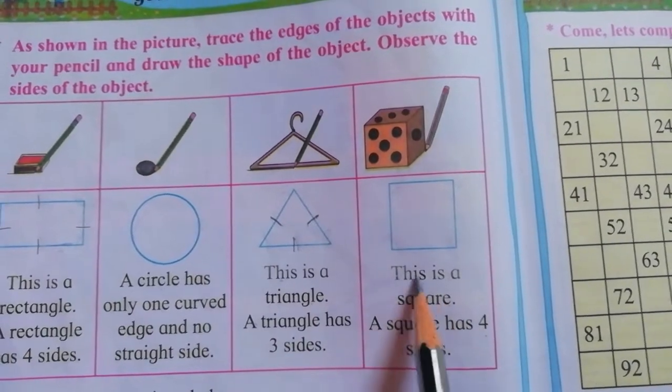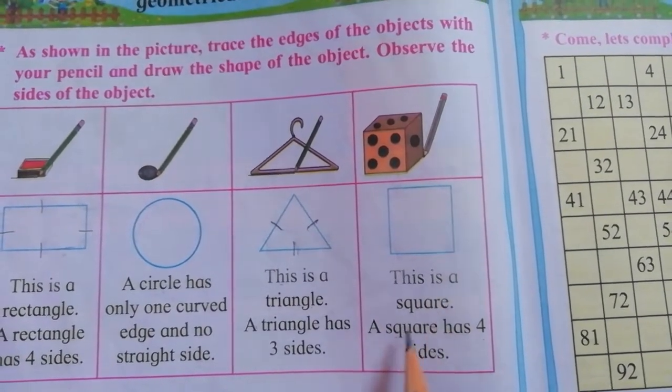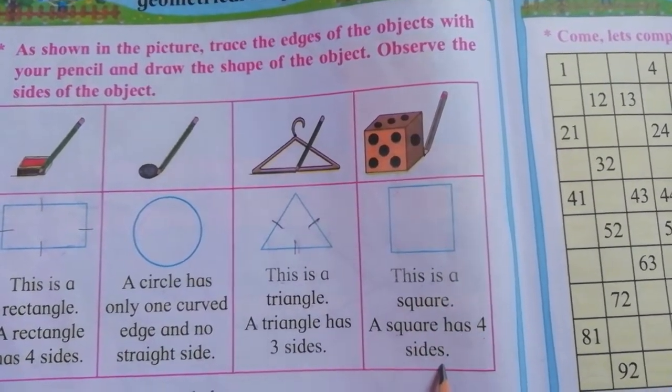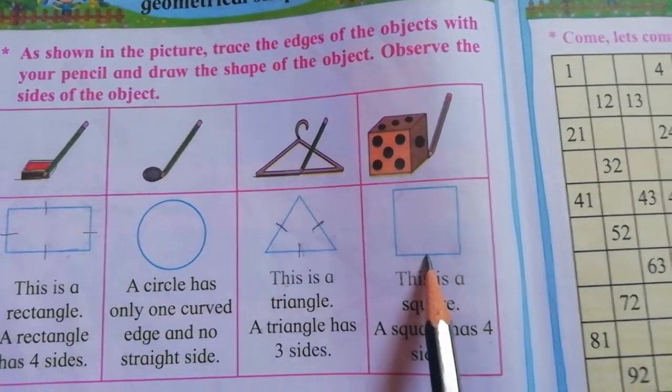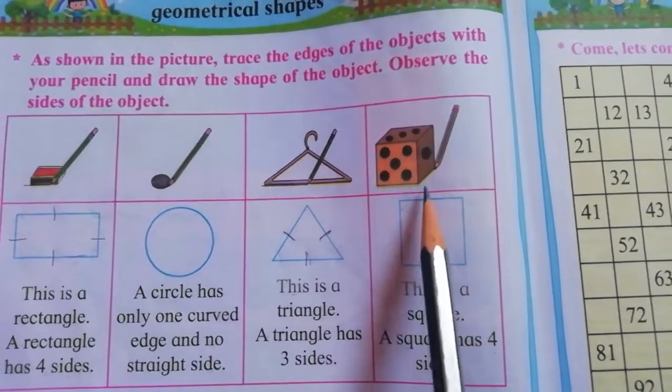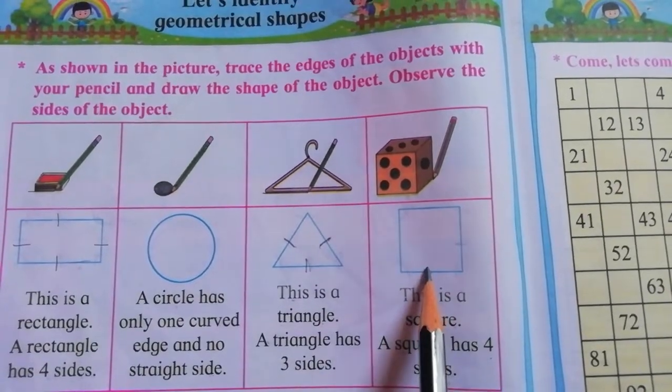Then next, this is a square. A square has four sides. This shape is called a square, and it has four sides: one, two, three, and four.